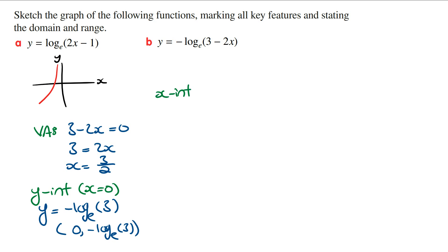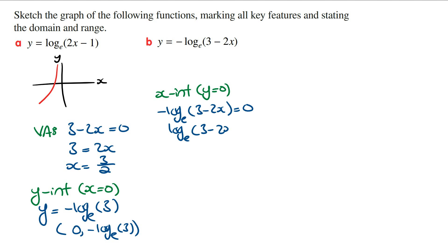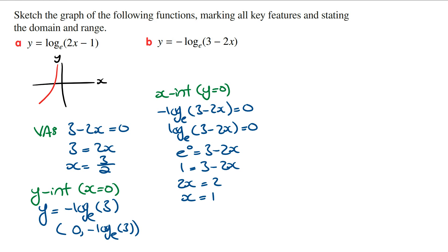For the x intercept, we let y equal 0 and solve for x. So minus log_e(3 minus 2x) equals 0. Dividing by negative 1 gives log_e(3 minus 2x) equals 0. So e to the 0 equals 3 minus 2x, meaning 1 equals 3 minus 2x. Rearranging gives 2x equals 2, so x equals 1. The coordinates of the x intercept are (1, 0).